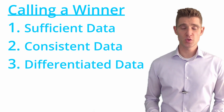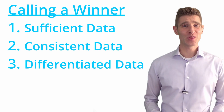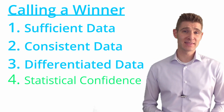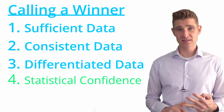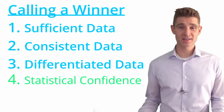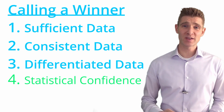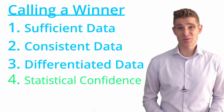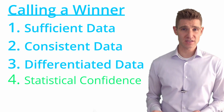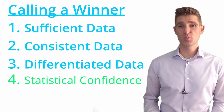Those are the three main measures: if you have sufficient data, consistent data, and differentiated data, there's a really high likelihood you'll also have statistical confidence. Statistical confidence is the nice thing to look at, but the problem is people see 95% or 99% and declare a winner without checking if they have enough sample size, a consistently winning variation, or a lift that's truly different from the control. Be very careful not to let your statistical confidence number lead you to call winners when you haven't checked the other factors.